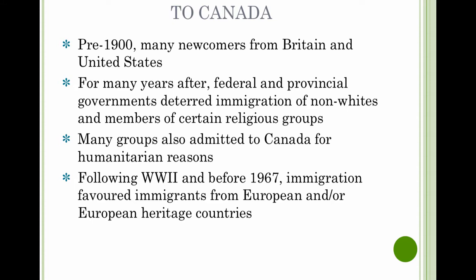Over the last century, key factors included the desire to maintain a British character in Canada, which motivated who was allowed to immigrate. The need for labour to develop the country brought in many different groups, who had different access to rights and responsibilities in early Canada. Humanitarian reasons were wide and varied — fugitive slaves who escaped from the U.S. to Canada back in the 1700s are one example, and there have been many examples of humanitarian immigrants since.